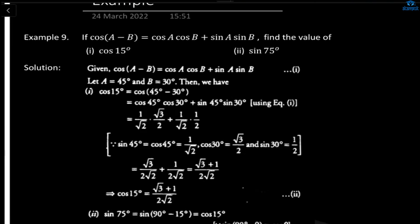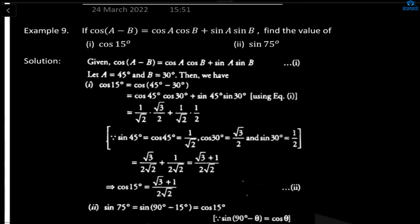Let's revise complementary angles. Sine 90 minus theta equals cos theta, and cos 90 minus theta equals sine theta. Tan 90 minus theta equals cot theta, cot 90 minus theta equals tan theta, cosec 90 minus theta equals sec theta, and sec 90 minus theta equals cosec theta. The main thing to remember is: sine complements cos, tan complements cot, and cosec complements sec.